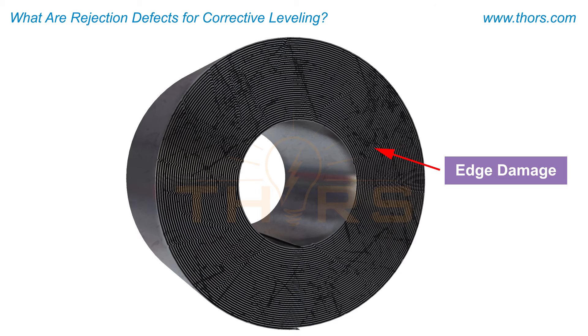The material may be damaged on the edges in a variety of ways at rolling mills. Rolled edges and other edge-related damage may occur.